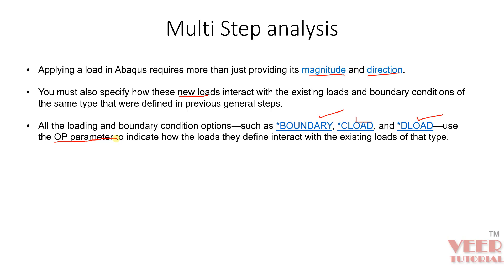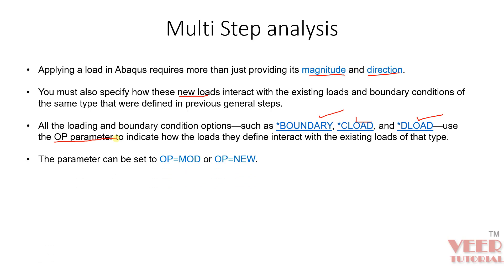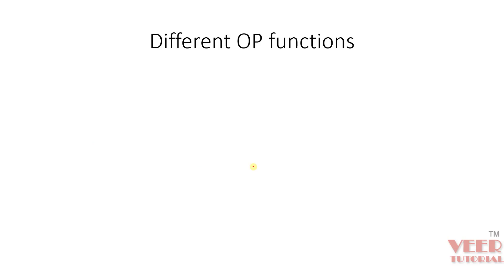For the op parameter, we basically have two values. One is called op equal to mod, and the second is called op equal to new. Mod means modify and new means completely new. Let's understand each one — we are going to learn about these different op functions, or operation functions.